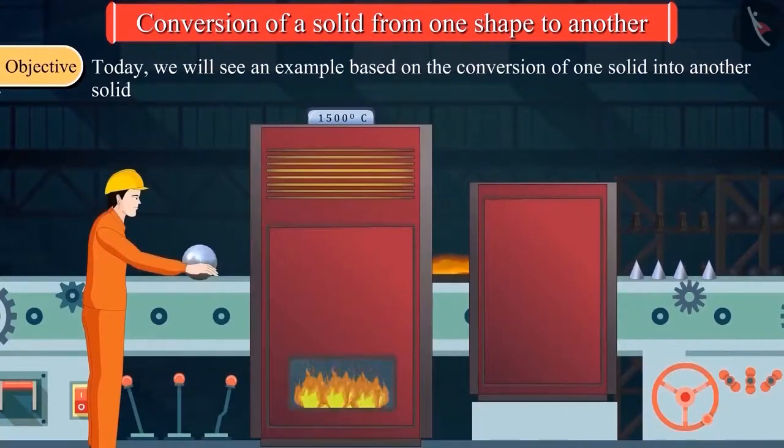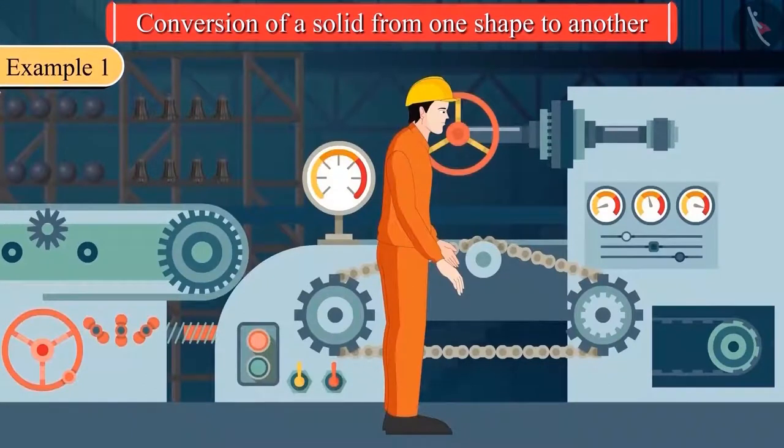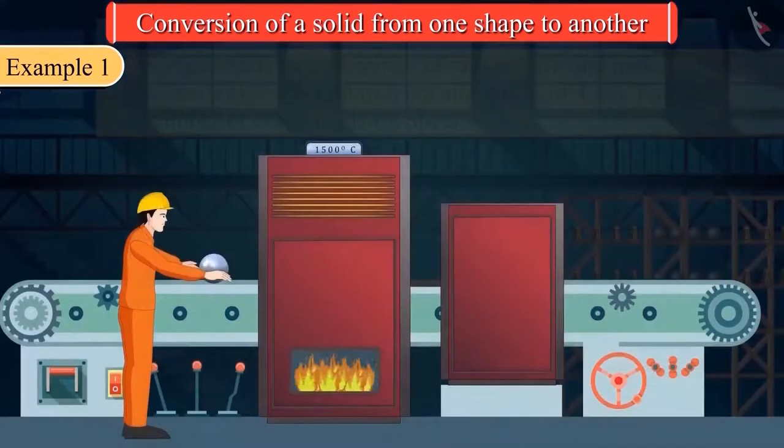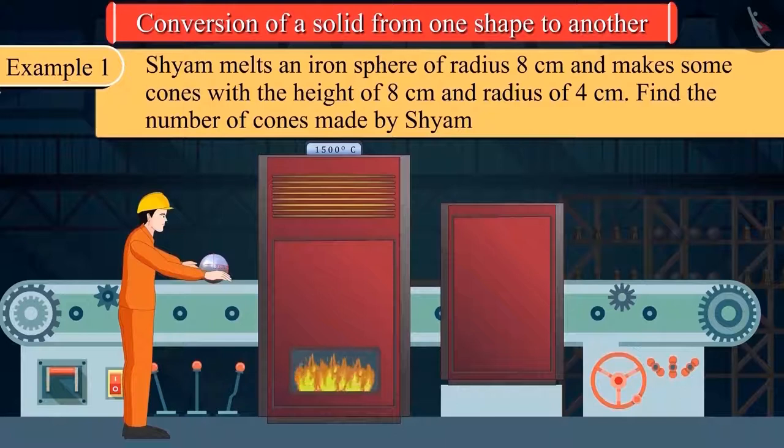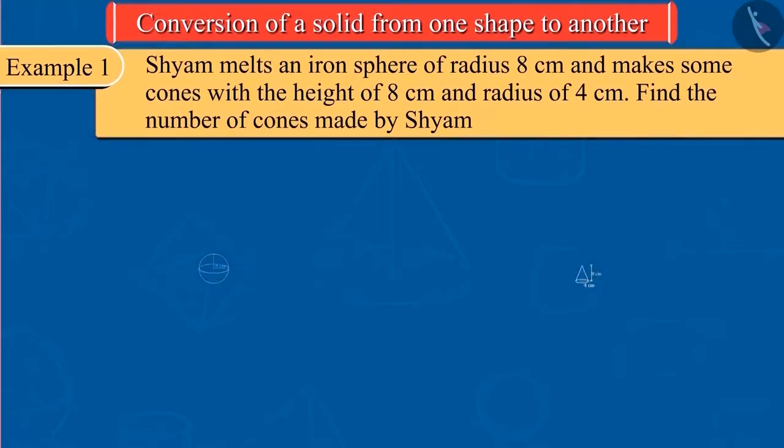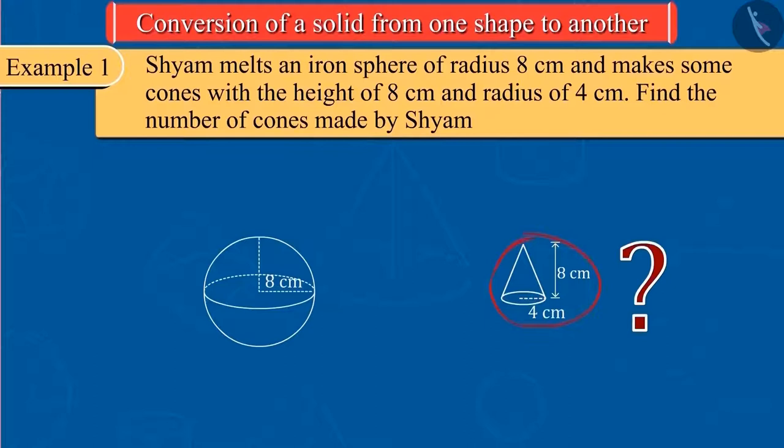Today, we will see some interesting examples based on this. Sharm works in an iron factory where iron objects of different shapes are made. One day, Sharm tries to melt an iron sphere of radius 8 cm and makes some cones with a height of 8 cm and radius of 4 cm. Find the number of cones made by Sharm.